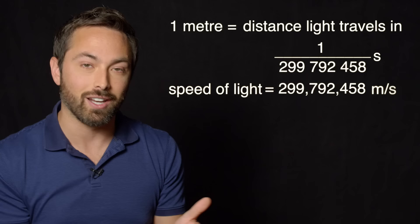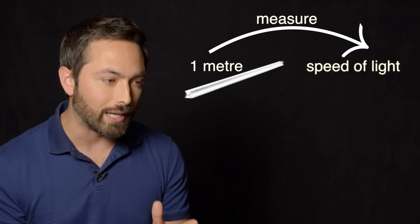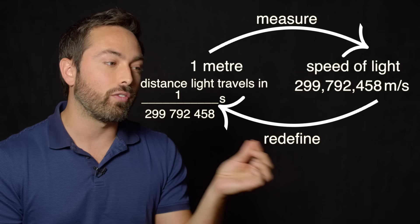First, you take the existing definition, say the length of that meter bar, and you measure as carefully as you can how it relates to a physical constant of the universe, the speed of light. Then you set the exact value of that constant and use it to redefine how long a meter is. I know this might seem circular, but importantly, it moves the point of truth off of the physical object and onto the unchanging constant of the universe.